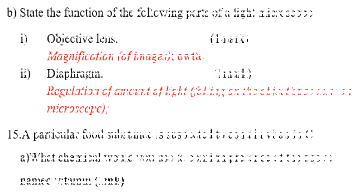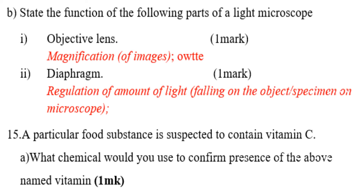Question number 15: State the function of the following parts of a light microscope. Roman numeral 1 — objective lens: it is used for magnification of images. Diaphragm: it is used for regulation of the amount of light falling on the object or specimen on the microscope.